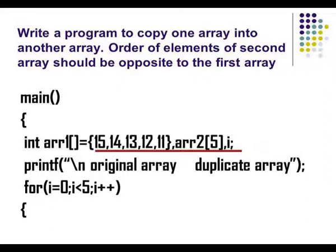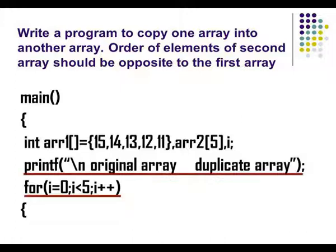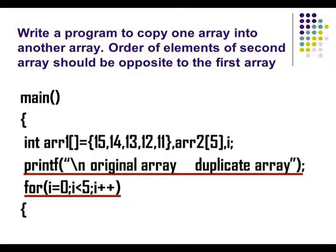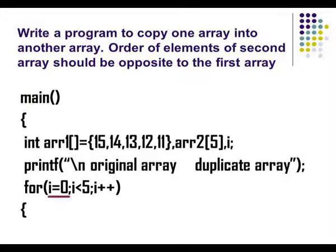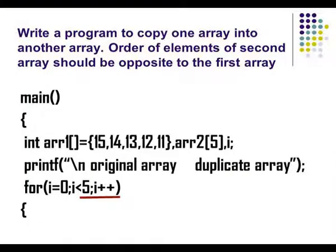I want elements 15 to 11 to be copied into array 2 in reverse order — from 11 to 15. I have an integer i to access the index, which refers to the position of an element in the array. In the for loop, I am using this integer variable to access the index, checking whether i is less than 5 because the array contains 5 elements and the index goes from 0 to 4. Each time the loop iterates, i is incremented by 1 to move to the next element.